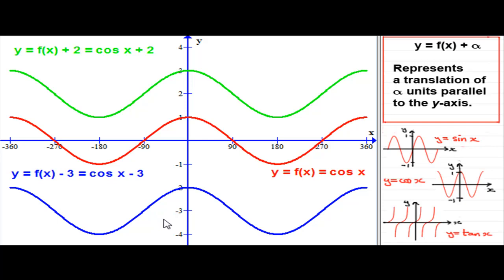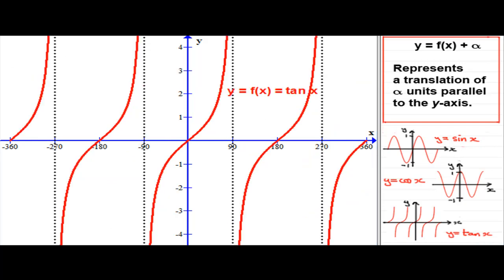Quite an easy idea, and we've got one more to do, and that's going to be the graph of y equals tan x. You should be familiar with this graph. It's got asymptotes at minus 270, minus 90, 90 degrees, and 270 degrees.